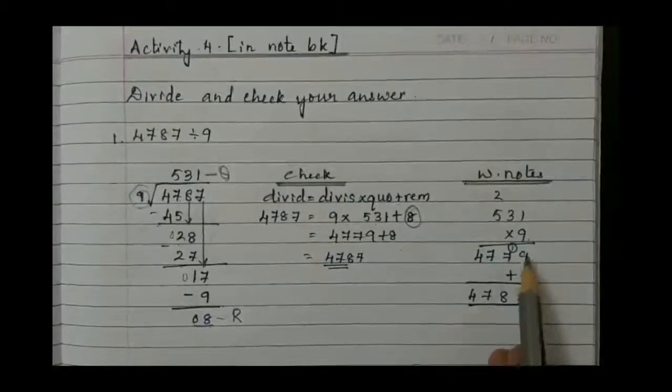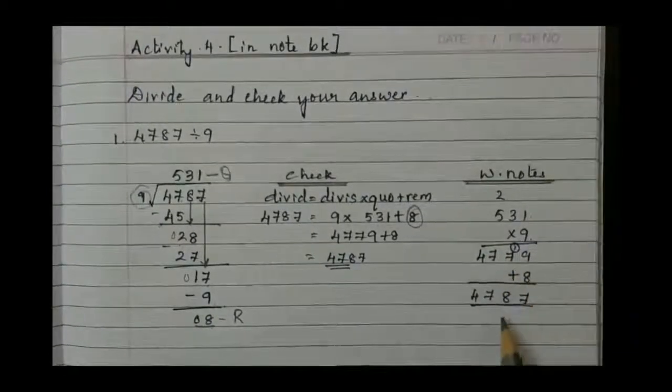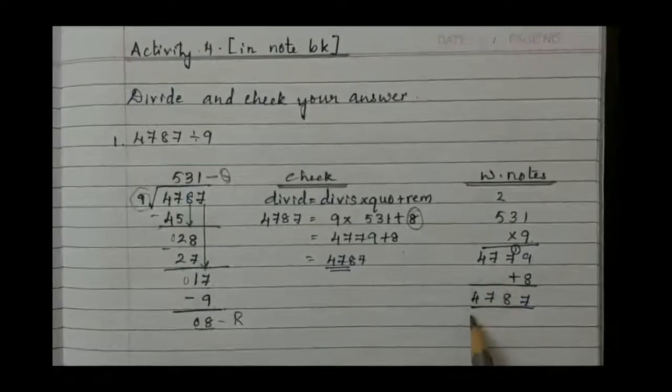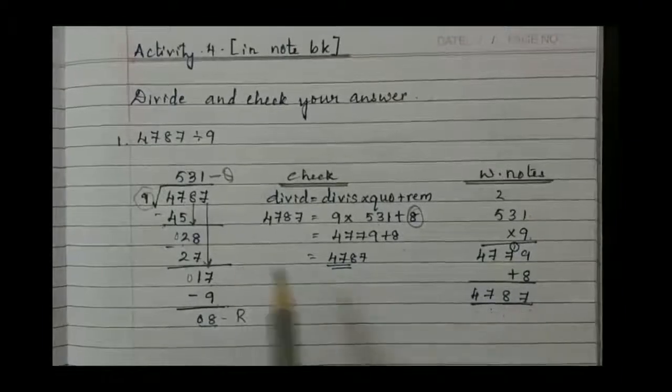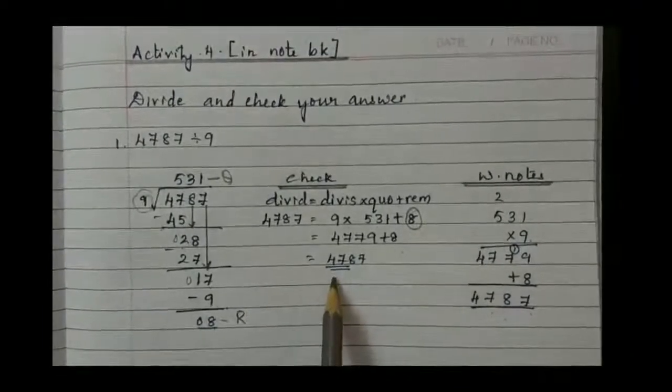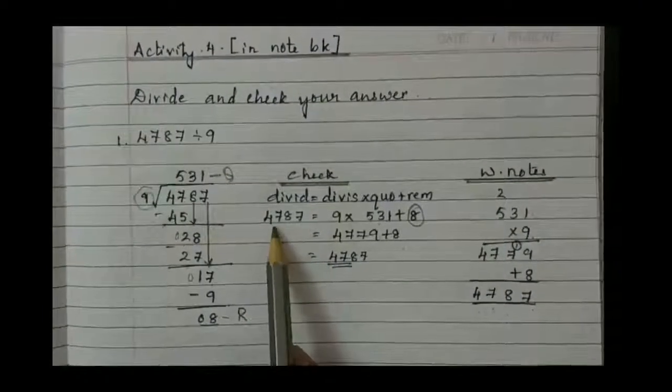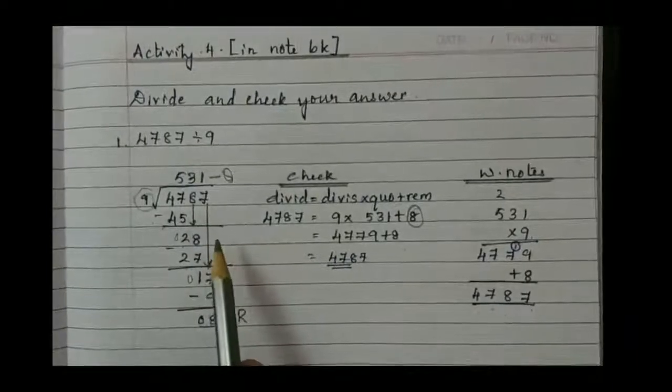Add the 8 to its number. So if you add, 9 plus 8 is 17, carry 1, then 7. 9 and 1 is 8, then 7, then 4 as it is. So all together we got 4787 as the answer. That is similar to dividend, that means our division is right.